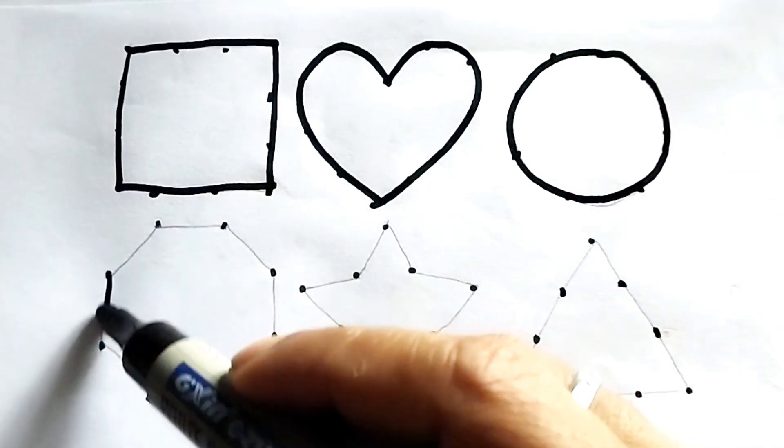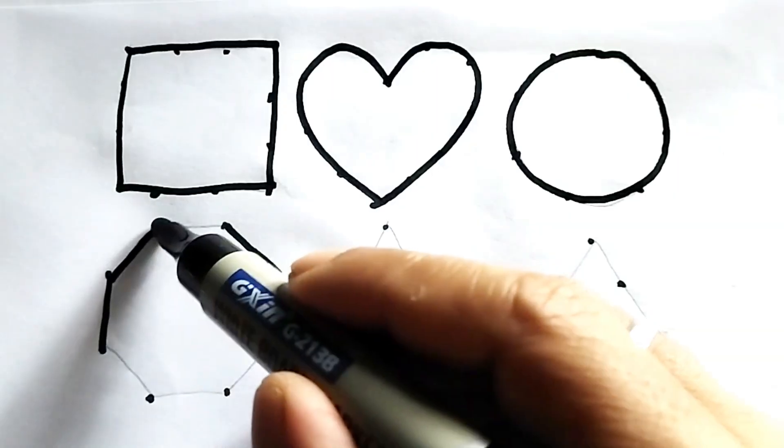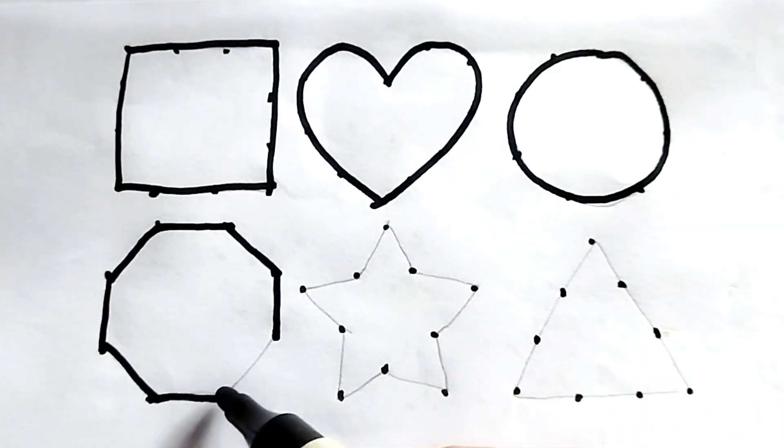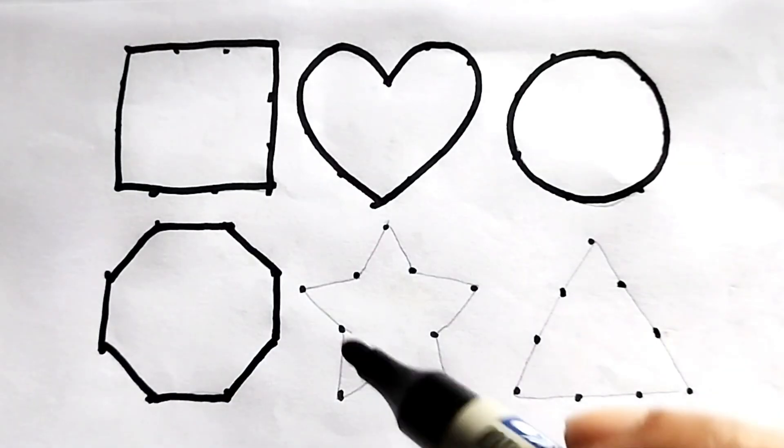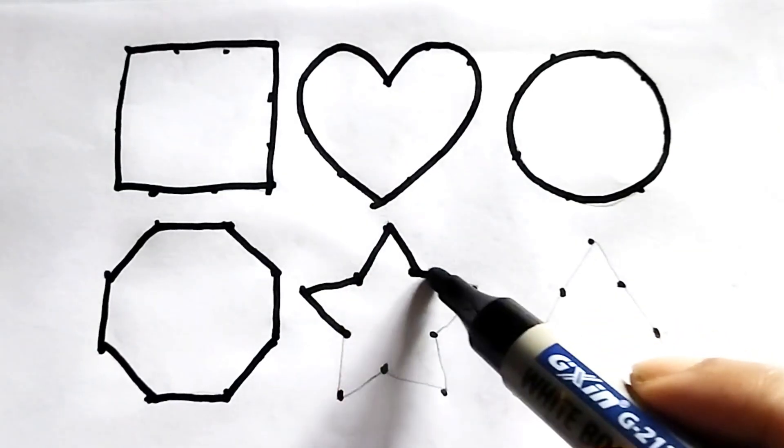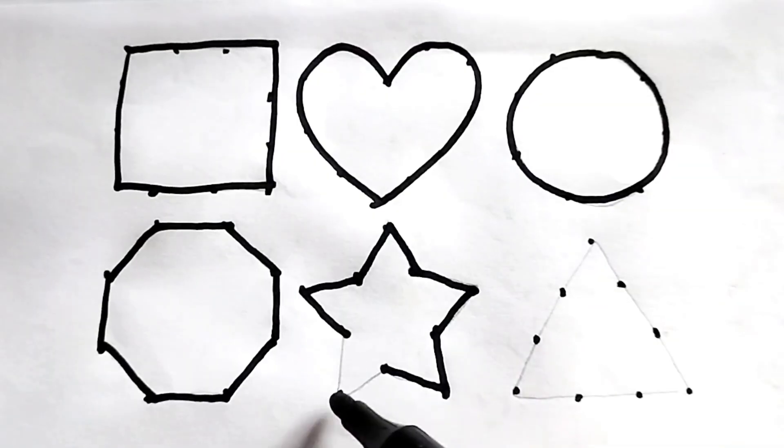One, two, three, four, five, six, seven, eight. Octagon, this is octagon. One, two, three, four, five, six, seven, eight.